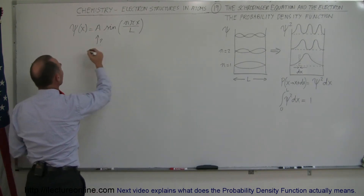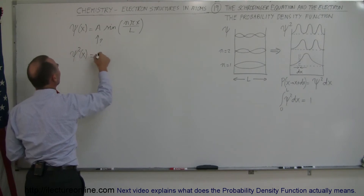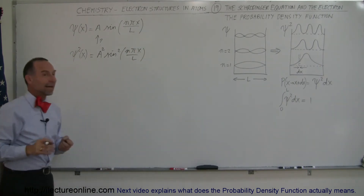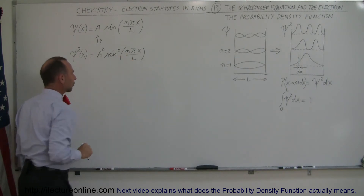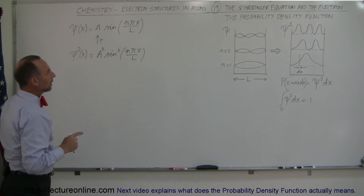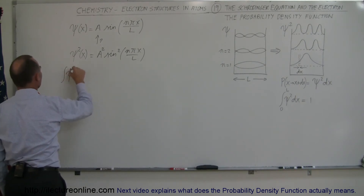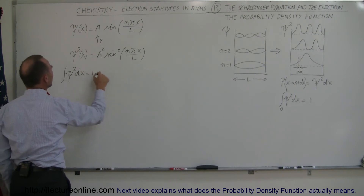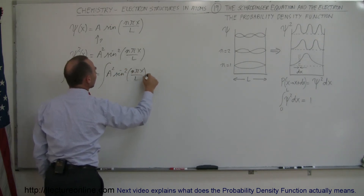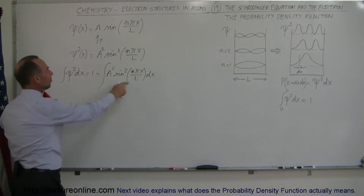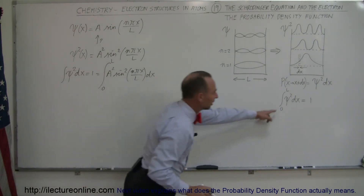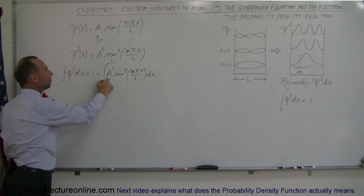First, we square both sides, so the square of the wave function equals a² times sine squared of nπx over L. That depends on the quantum state n of the electron, L being the size of the box, and x being the position inside the box. Then we take the integral of that times dx, which must equal 1 — it equals a² times the integral of sine squared of nπx over L times dx from 0 to L. Since we know this equals 1, we can solve for a.